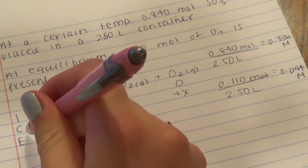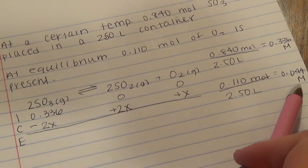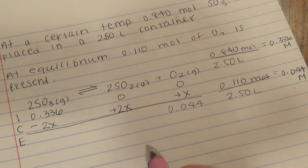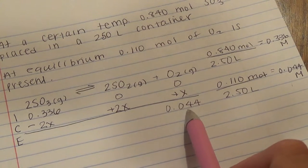And then the final. We do know this value, which is right here: 0.044. So 0 plus x equals this, which means x equals 0.044.